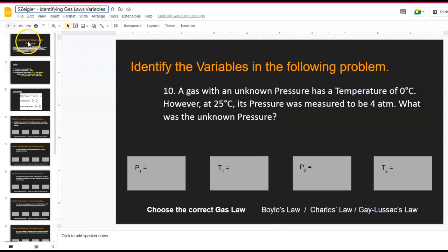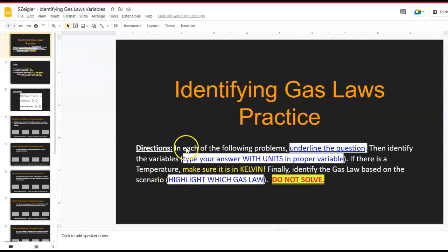All right, so here I have all the slides. This gives you the direction as to what you're doing. So it says here you're going to underline the question, you're going to identify your variables with its units, and then you are going to highlight which gas law it is. So here it tells you that whenever you have temperature, you got to convert it to Kelvin. You're not solving these problems. So one of your answers will not be filled in, but you will fill in what unit it is.